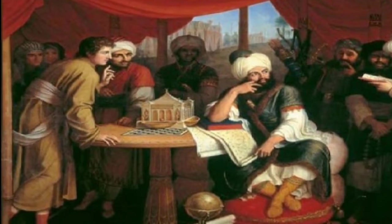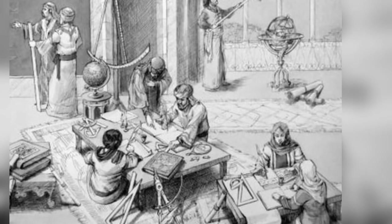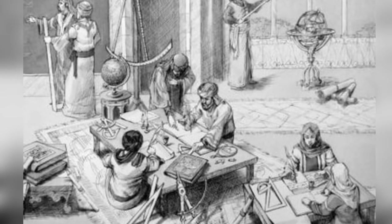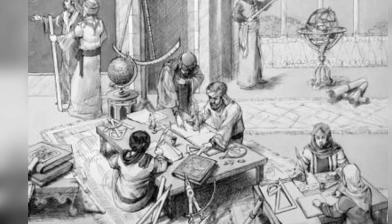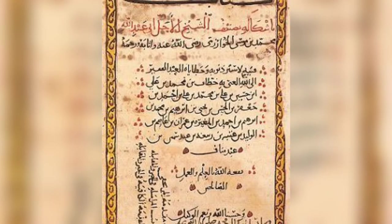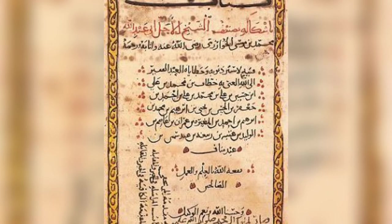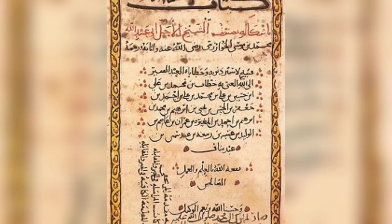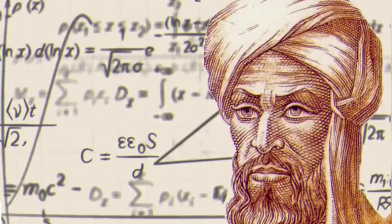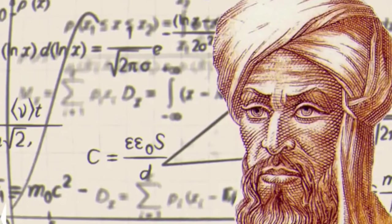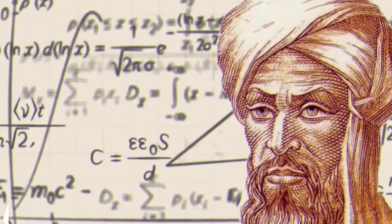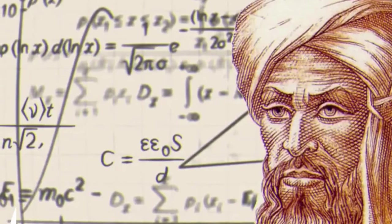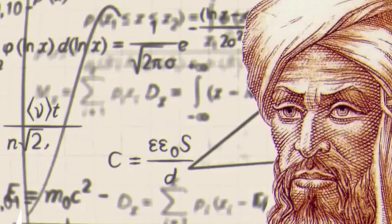The House of Wisdom acquired and translated scientific and philosophic treatises, particularly Greek, as well as publishing original research. Al-Khwarizmi's work on elementary algebra, the Compendious Book on Calculation by Completion and Balancing, was translated into Latin in the 12th century, from which the title and term algebra derives.